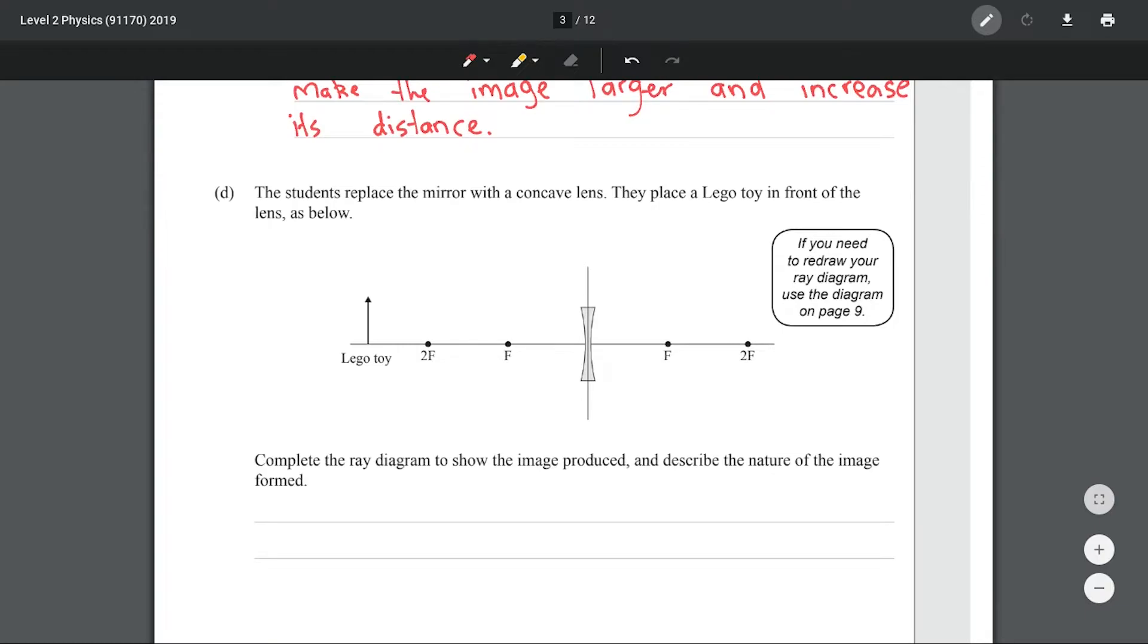The student replaces the mirror with a concave lens. They place a Lego toy in front of the lens. Complete the ray diagram to show the image produced and describe the nature of the image formed. The first ray is parallel to the axis and then away from the focal point. The second one is right through the middle. The location of the image is right there. We can see that the image is diminished, it is virtual, and it is also upright.